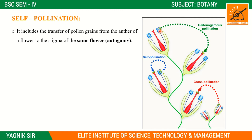In self pollination, it is the same flower or the same plant. In geitonogamy, it is the same plant but different flowers — one plant with multiple flowers. In cross pollination, there are two separate plants involved.